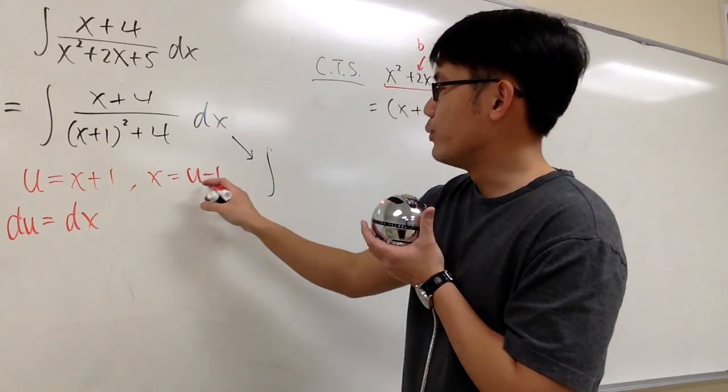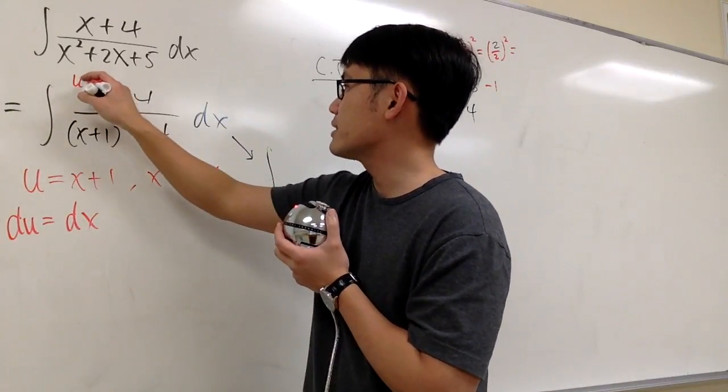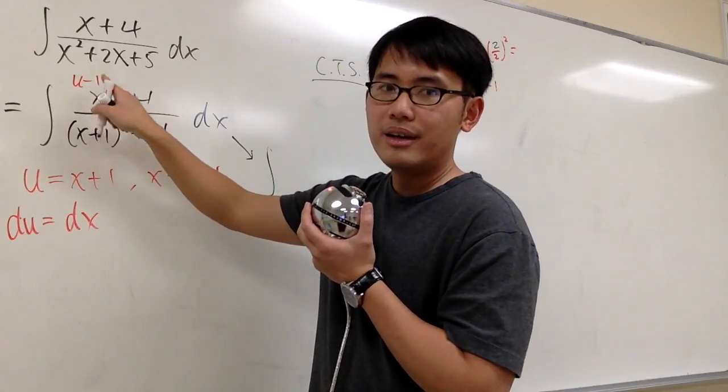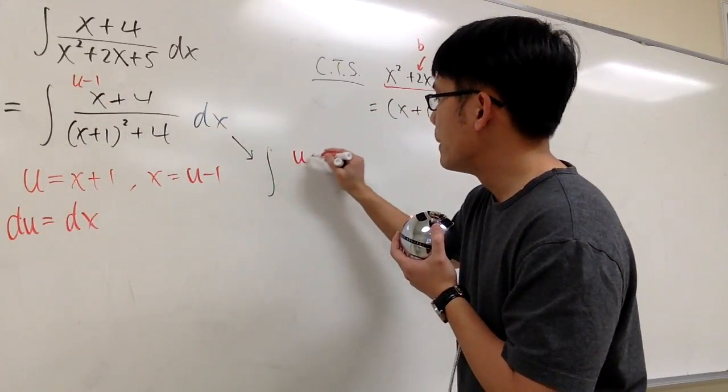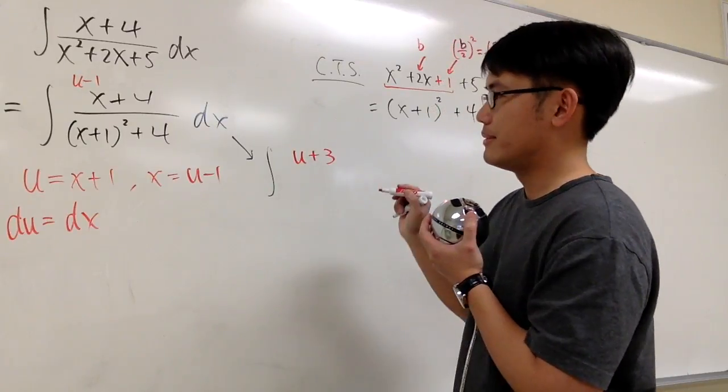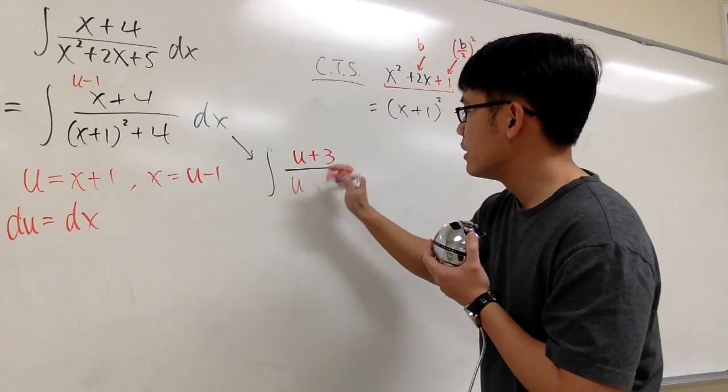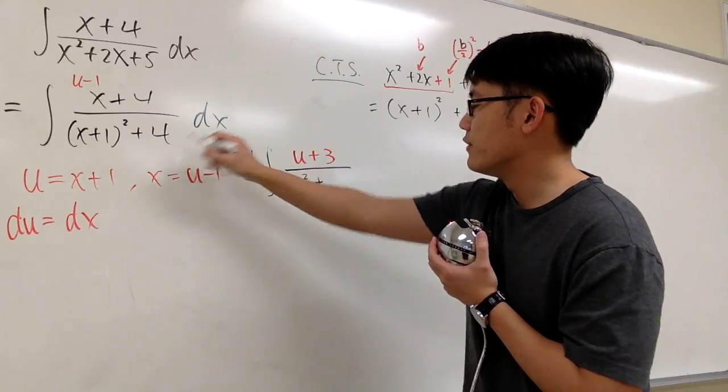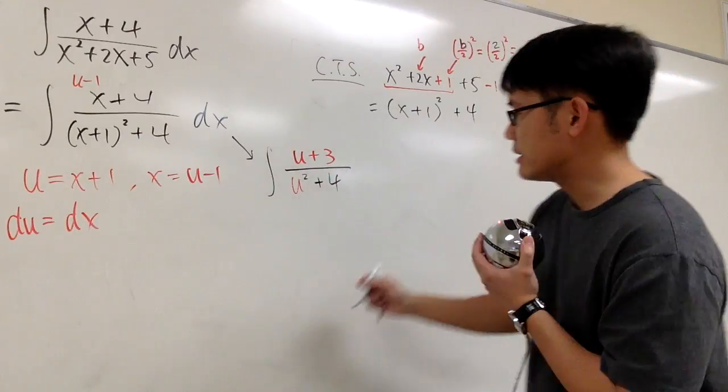Integral, and if you plug in u minus 1 for x, we have u minus 1 plus 4, we get u plus 3 on the top, over u squared plus 4. And we have dx, which is the same as du, that's very nice. And now this is the integral in the u world.